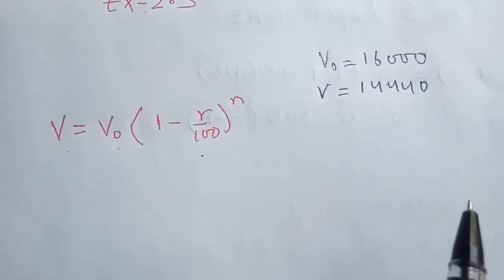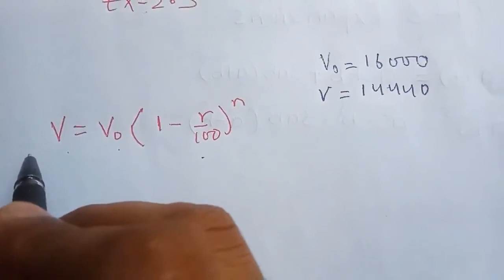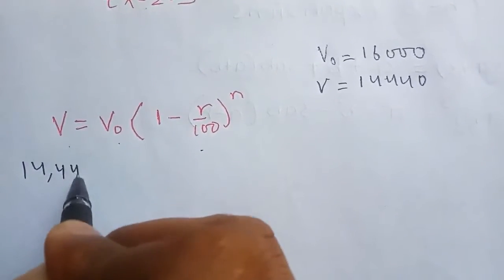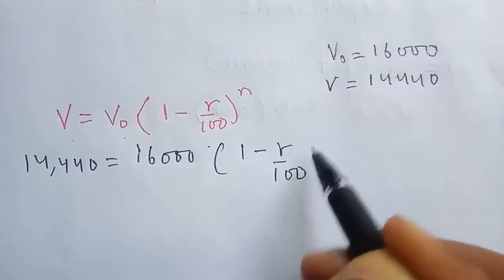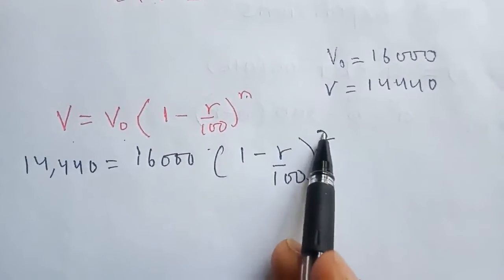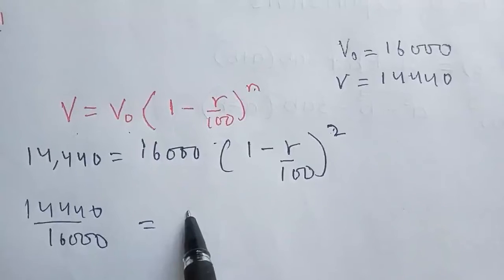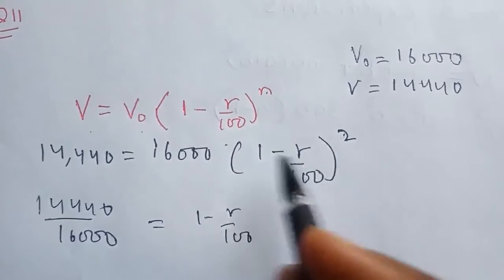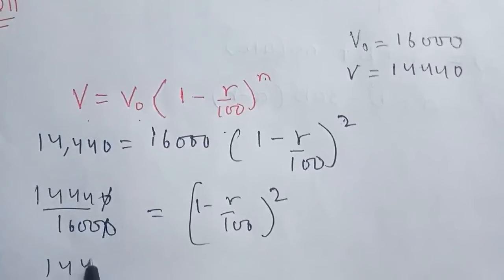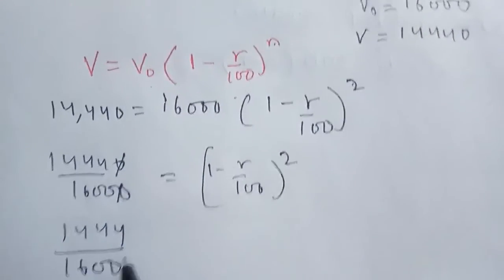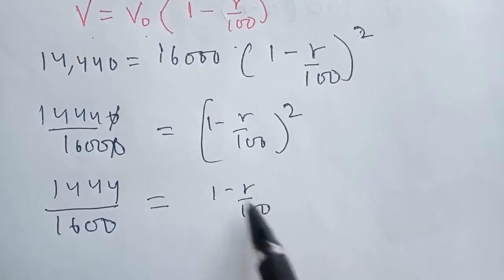I'm talking about 14,440. Now in this, we are going to use a simple formula. V equals 14,440 is equals to 16,000 times (1 minus r upon 100) to the power 2, where N is 2. So 14,440 upon 16,000 equals (1 minus r upon 100) squared. The zeros cancel out, giving us 1,444 upon 1,600 equals (1 minus r upon 100) squared.